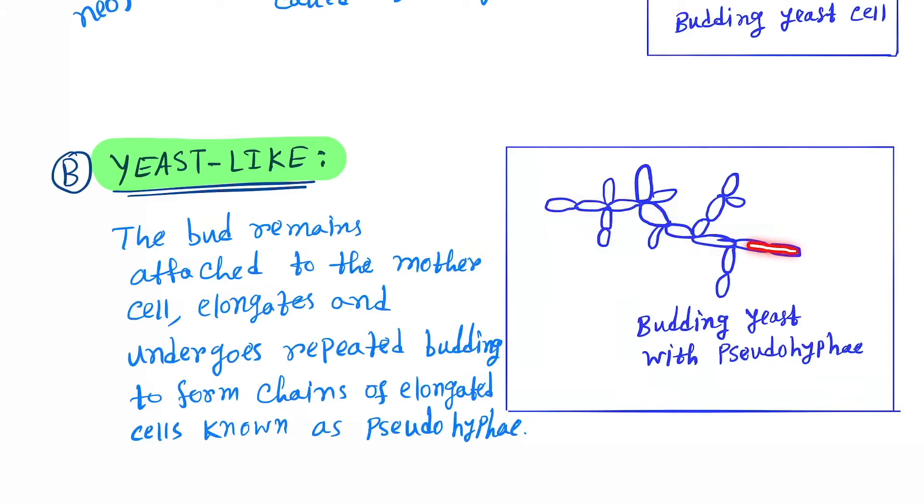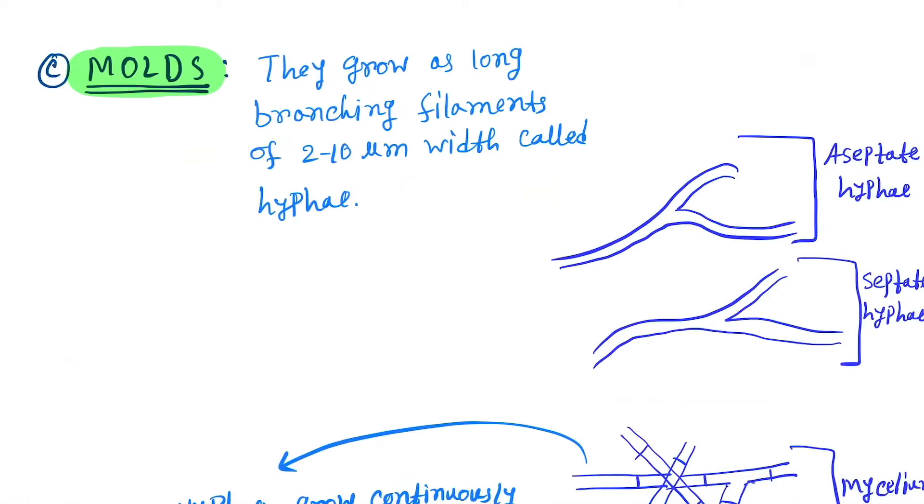This is the mother cell and these are the elongated pseudo-hyphae. The example is Candida albicans.